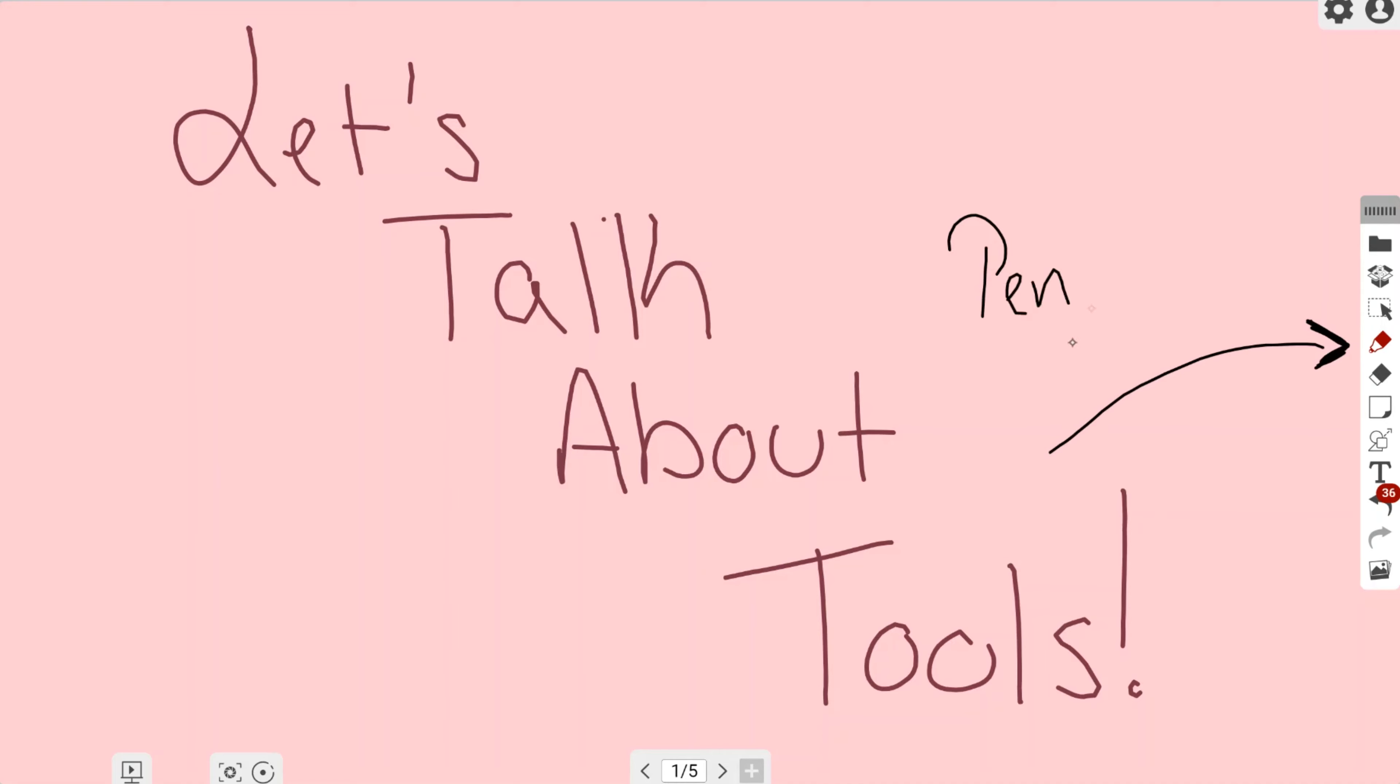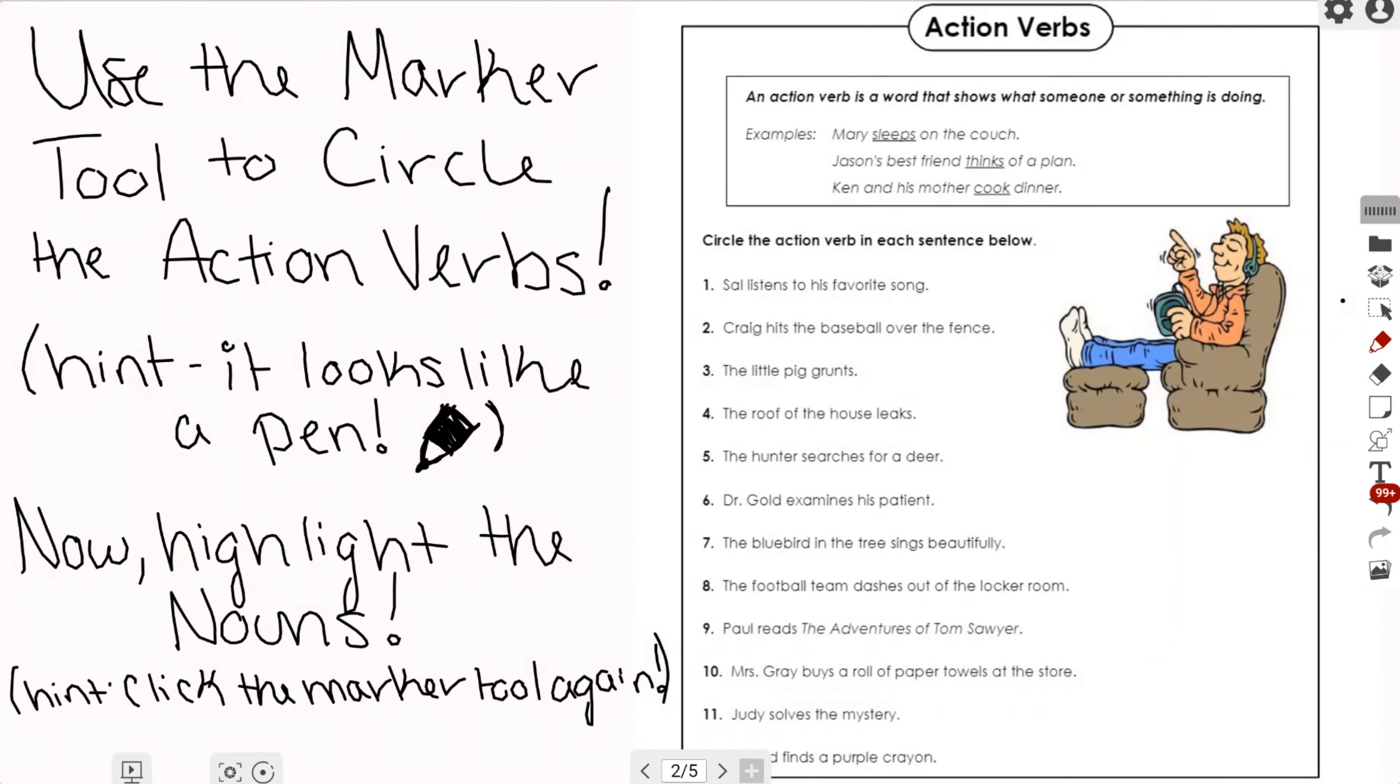But just in case you need it, it looks just like a pen. It's located in the right hand toolbar, right under the selection tool and right above the eraser tool. I'm going to go ahead and go to the next page and we're going to do a little bit of an activity to show you how the pen tool works.